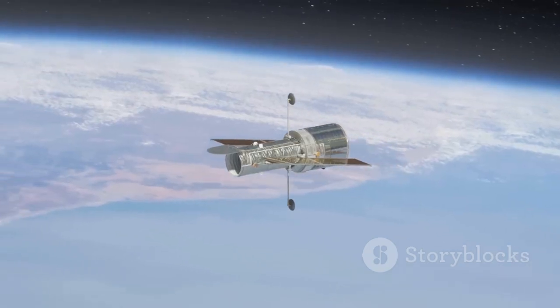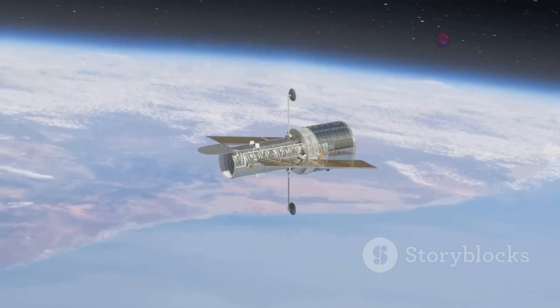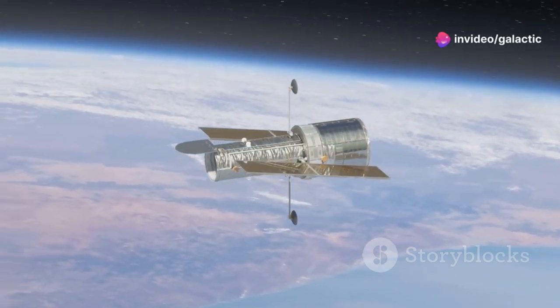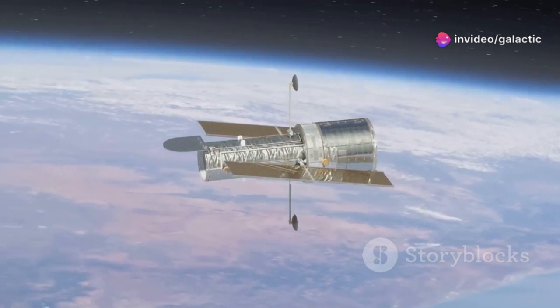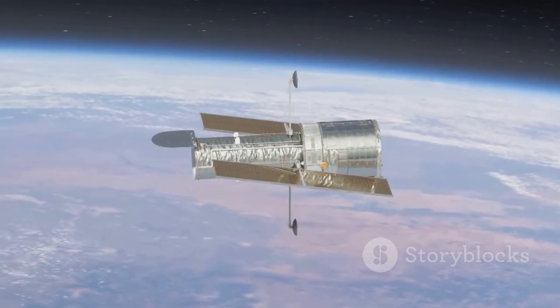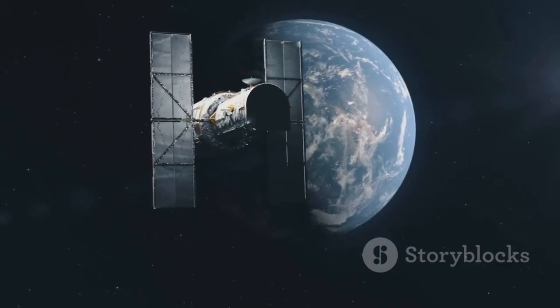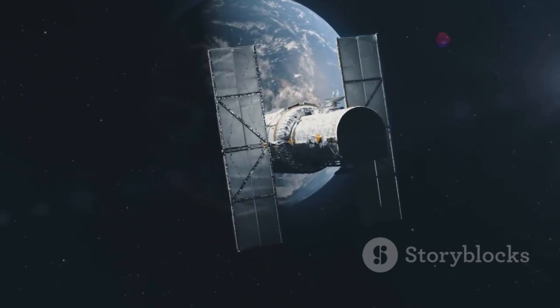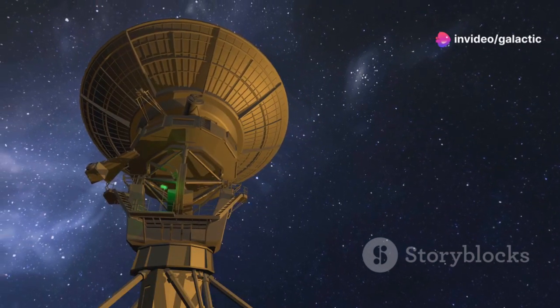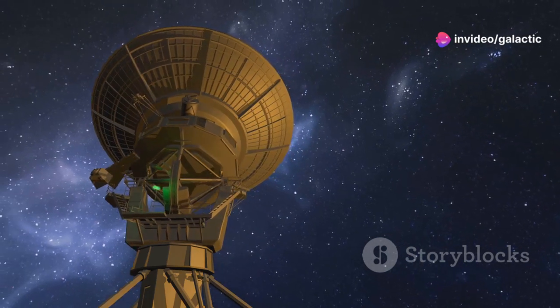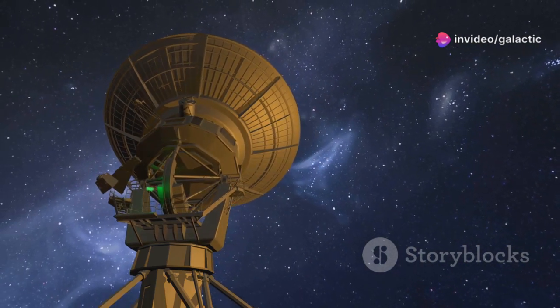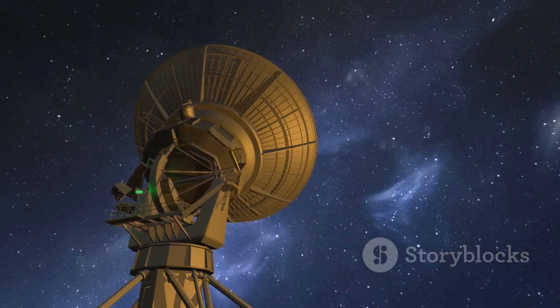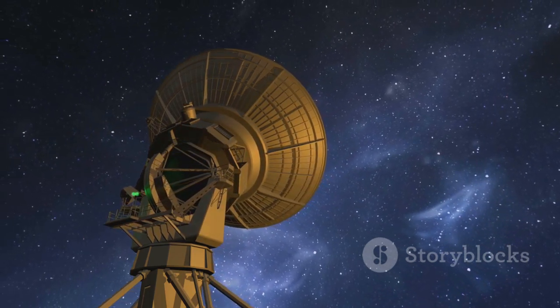And that's not all. JWST can also see things that other telescopes can't. Thanks to its powerful infrared vision, it can peer through clouds of cosmic dust that block visible light, revealing hidden stars and galaxies that were invisible before. It's like having X-ray vision for space. With JWST, we're not just seeing farther, we're seeing deeper, uncovering mysteries that have been hidden since the dawn of time.